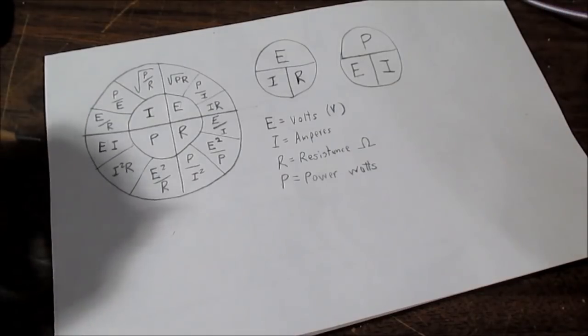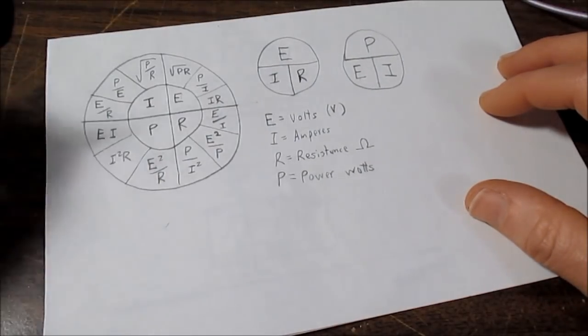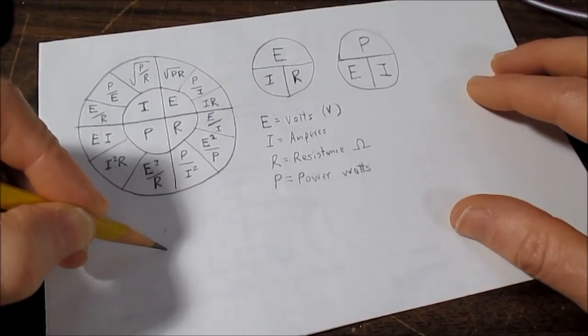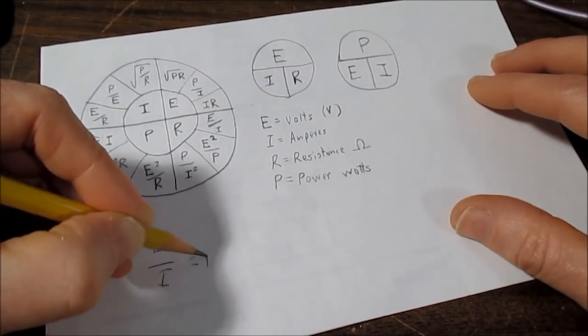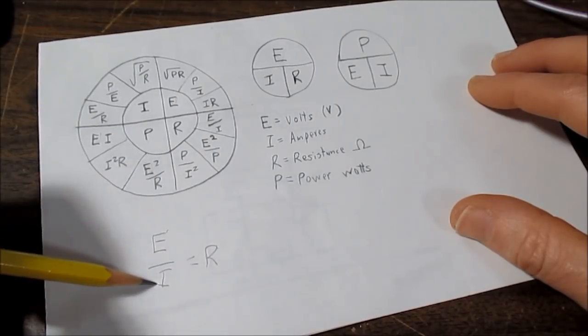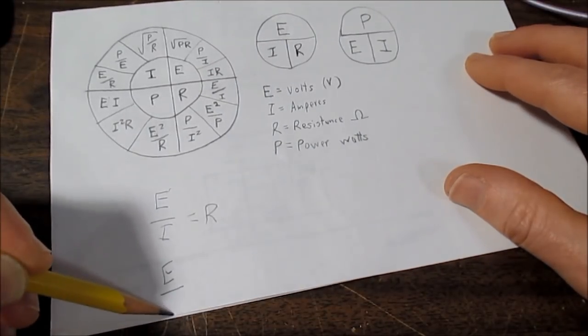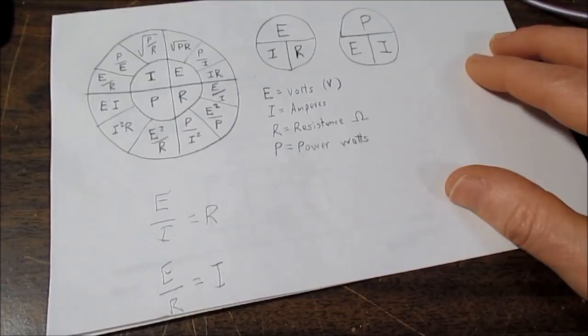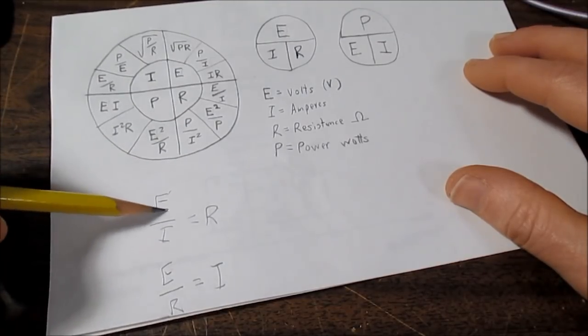Now the way I like to remember Ohm's law is using this, but just write it out, simple math, E over I equals R. And these are algebraically interchangeable, so you can write it as E over R equals I.